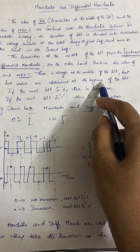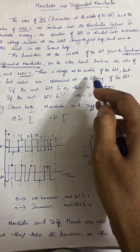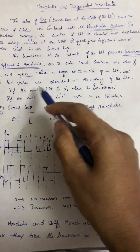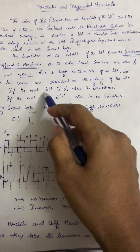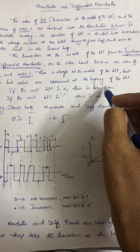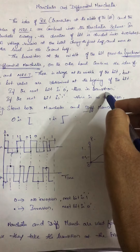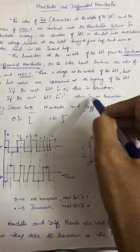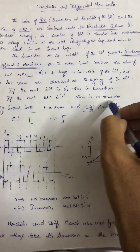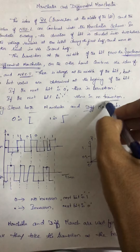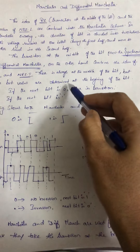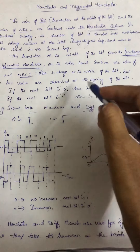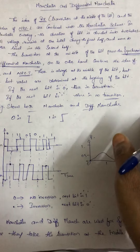Starting from the beginning of the bit, we can determine the value of that bit. If the next bit is 0, a transition takes place. If the next bit is 1, there is no transition. So like that we can indicate 0s and 1s in binary.